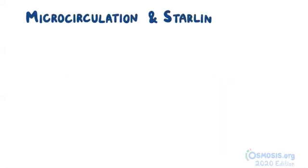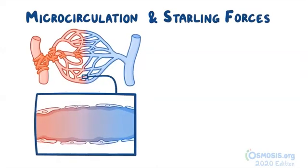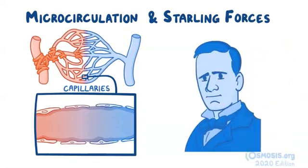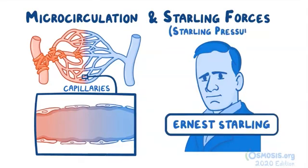With microcirculation and Starling forces, microcirculation refers to the blood that flows through the smallest vessels in the circulatory system, called capillaries. And Starling forces, named after British physiologist Ernest Starling, also often called Starling pressures, are the forces that drive the exchange of fluid through the walls of the capillaries.